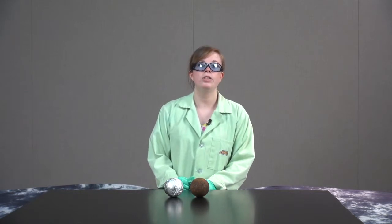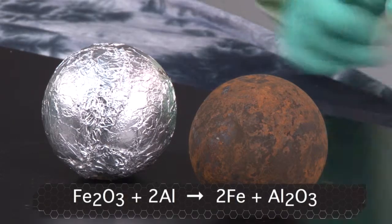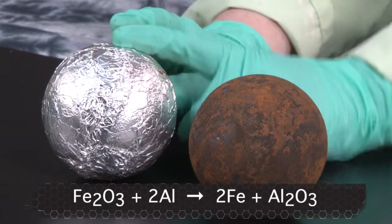The Thermite reaction was patented in 1895 by German scientist Hans Goldschmidt and is used to weld iron railroad tracks together. The reaction is a single replacement reaction between iron(III) oxide, or rust, and aluminum metal.